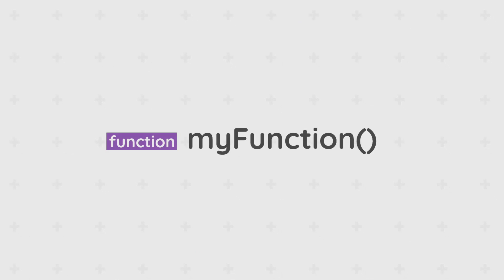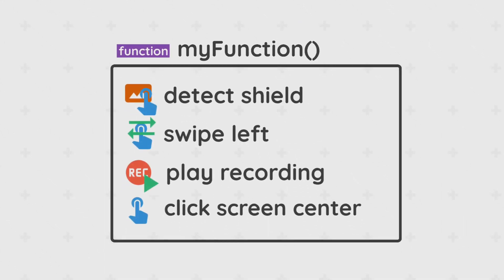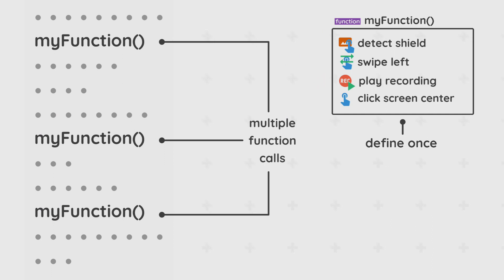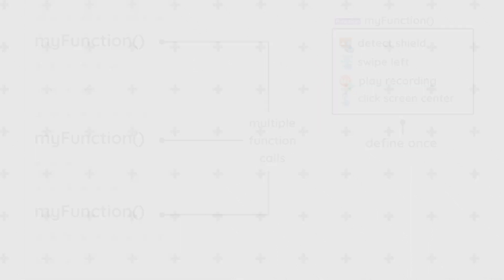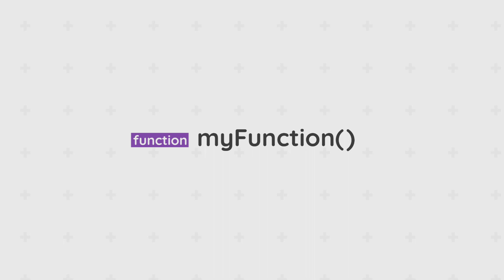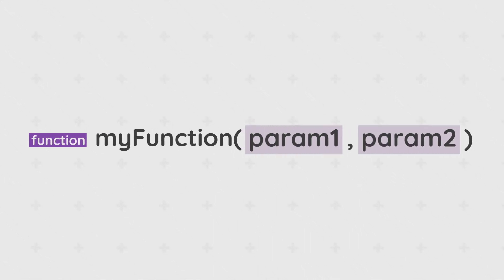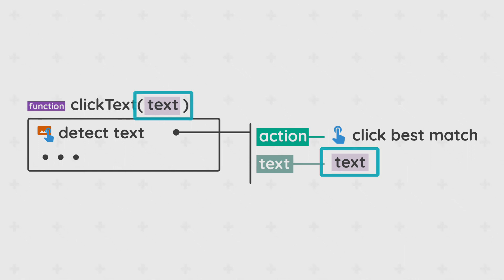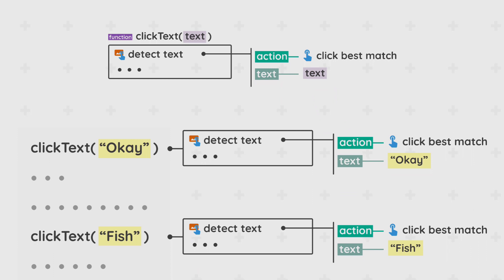Next we'll look at functions. Functions are simply tasks that carry out a certain purpose or activity. They are a little bit like groups, but can be defined once and carried out at multiple places in our macro. They also let us pass values and variables to them in the form of parameters, to further modify the behavior of the function. Parameters are like mini variables that are only accessible within that function — whenever we pass a value or variable to a function, these parameters are assigned with those values.